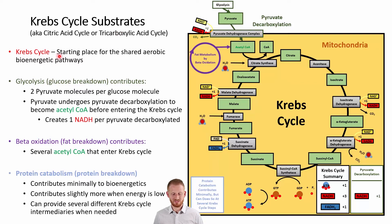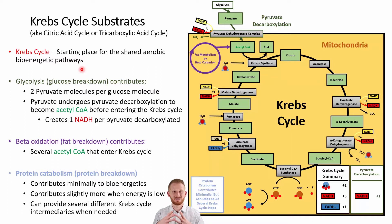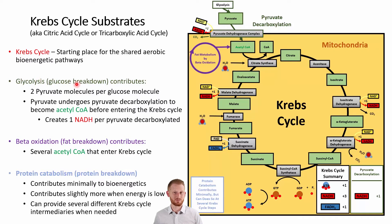The Krebs cycle is the starting point for the shared aerobic bioenergetic pathways, which is why we're starting with it in this video. In order for the Krebs cycle to work, we need to fuel it with intermediaries — substances that it can use. There are various ways to do this through different energy substrates. Glycolysis, which is the breakdown of glucose or carbohydrate, contributes to the Krebs cycle.